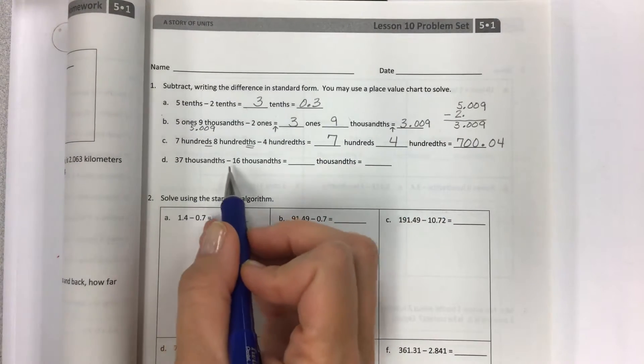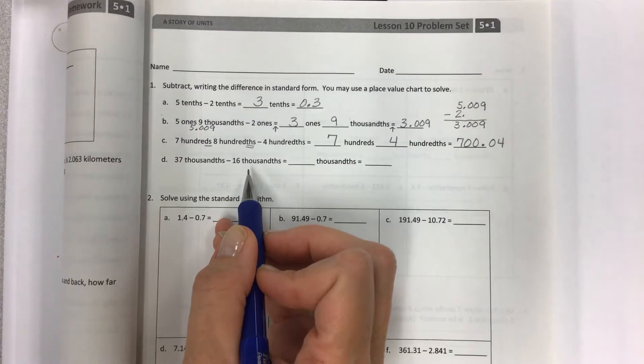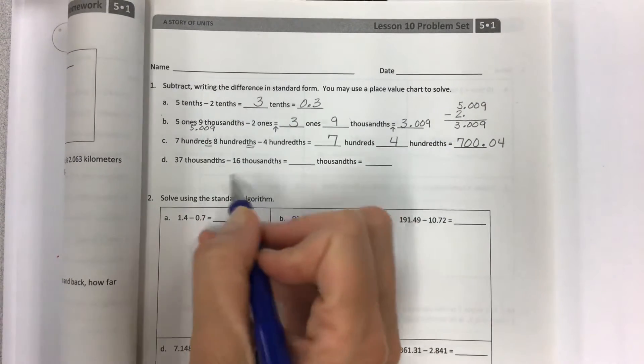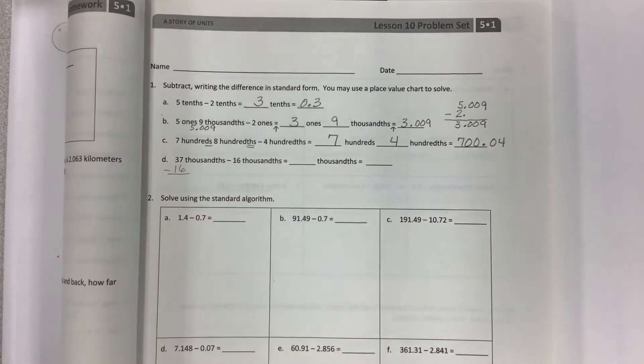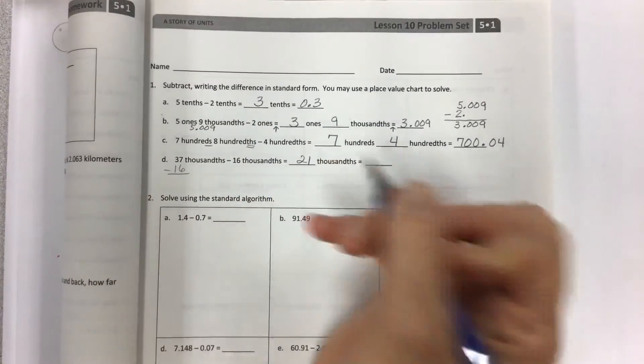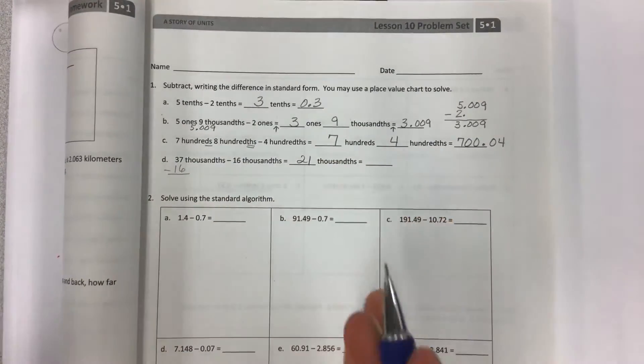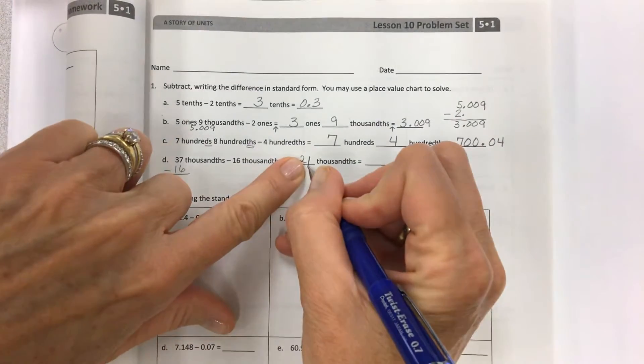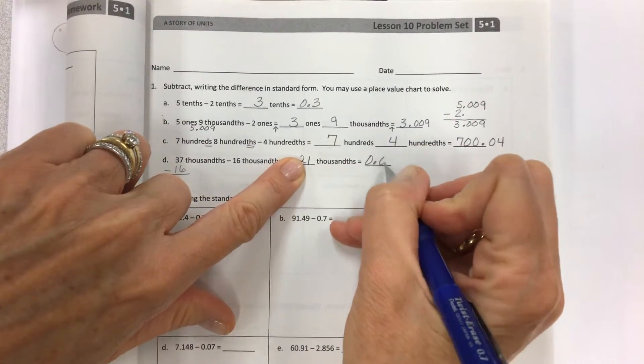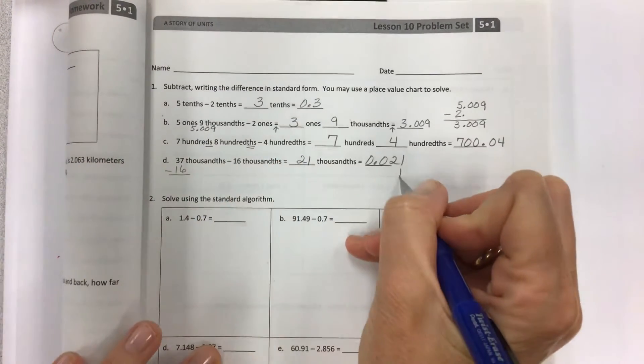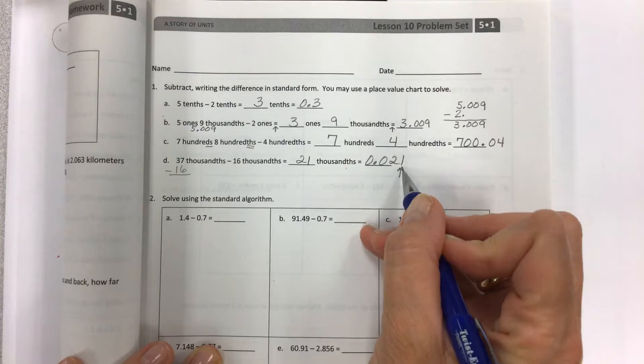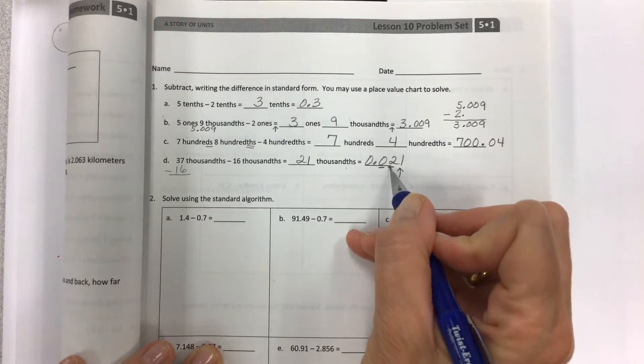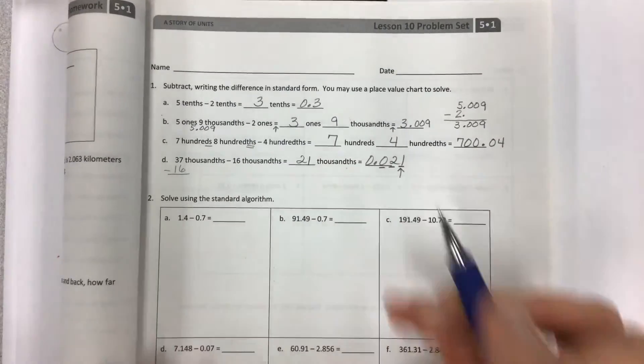Then we have 37 thousandths minus 16 thousandths, and really it's the same form, so we're just going to be taking this away. You end up with 21 thousandths. Don't forget, I have to have my last digit in this place, the thousandths place. It needs to end up right there.